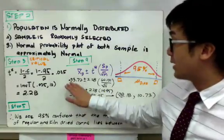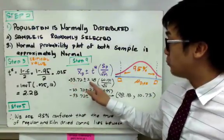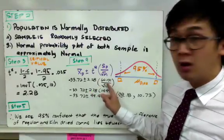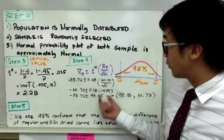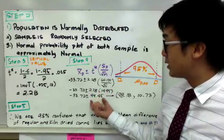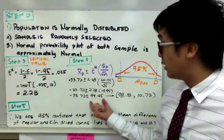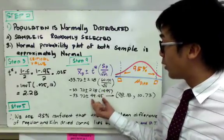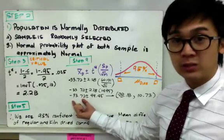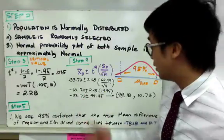So we have negative 33.72 plus or minus 2.28 times 66.171 all over the square root of 11. That will give you your standard error, multiply it with 2.28, which gives you your margin of error. Now if you take 44.75, add it and subtract it to negative 33.72 and you will get your confidence interval, which is negative 78.18 and 10.73.